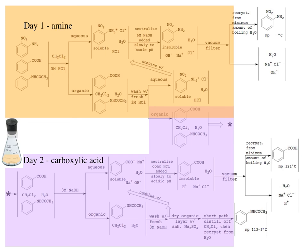In day two we will take our flask, uncork it, and extract with sodium hydroxide our carboxylic acid as a carboxylate salt, which we will neutralize with HCl and have it precipitate out. We will isolate the carboxylic acid precipitate by vacuum filtration and recrystallize it on the third day.